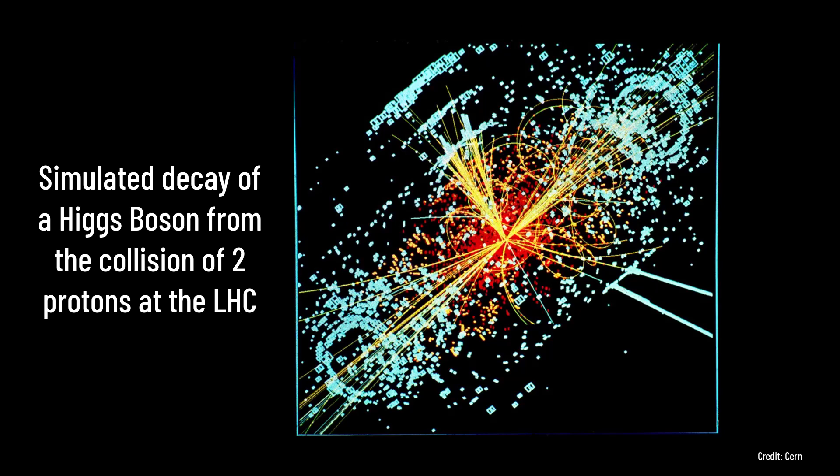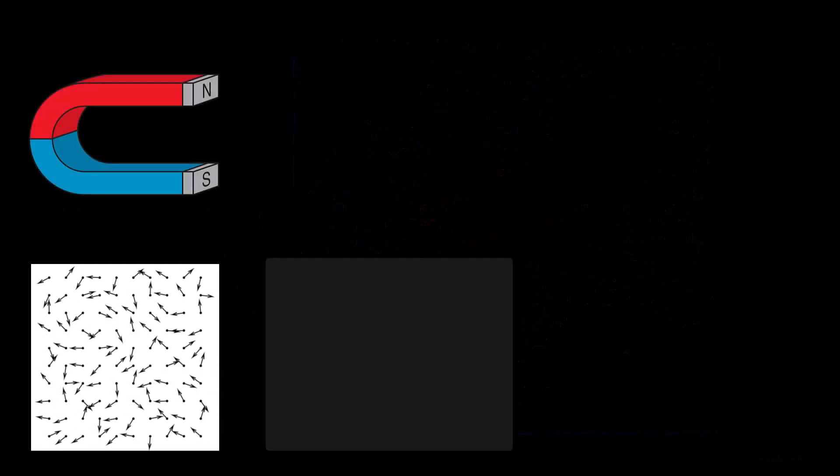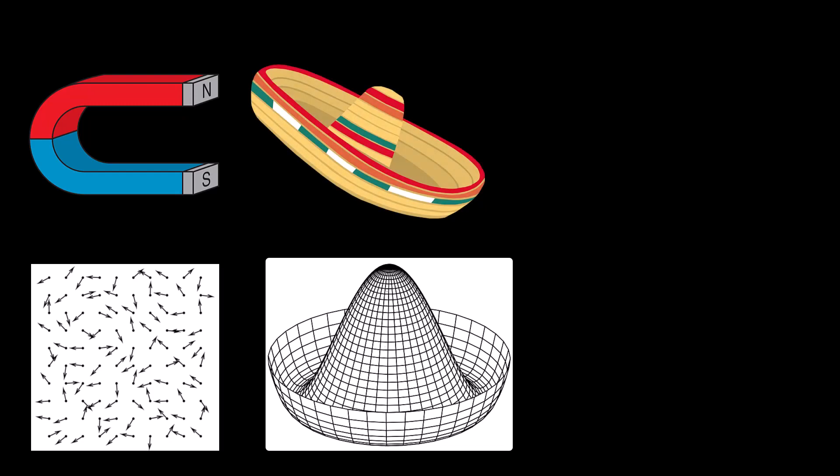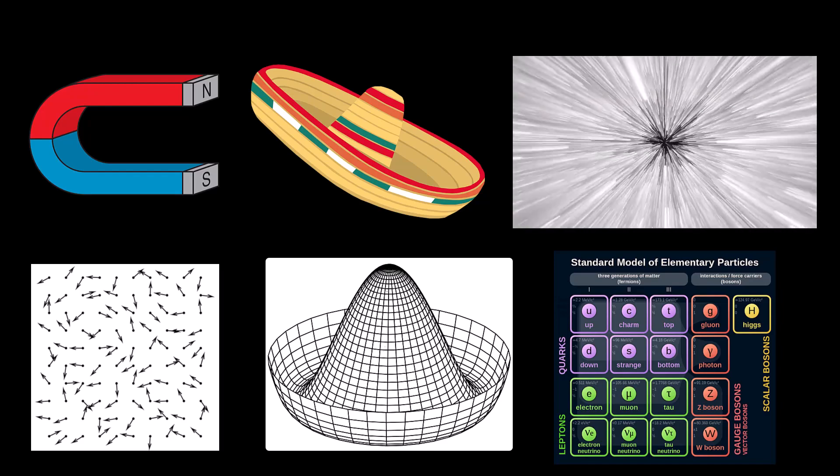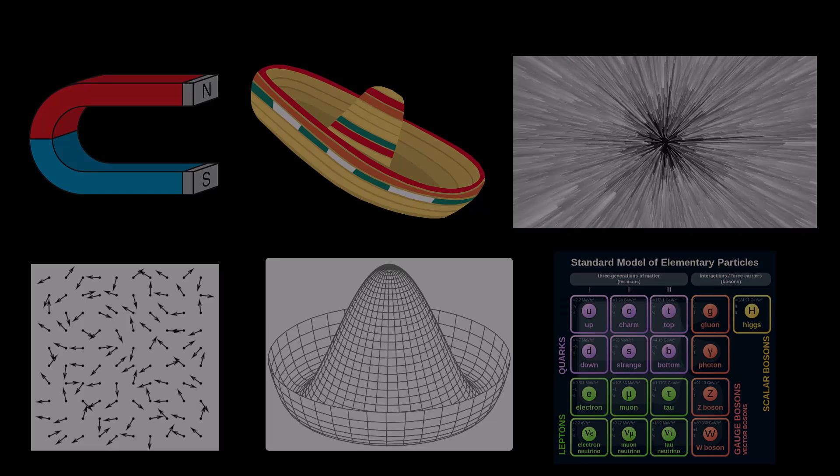This answers my original question, asking how magnets, Mexican hats, and the early universe are related. Magnets show spontaneous symmetry breaking, which can be described by the Mexican hat potential, and then applied to the high temperatures of the early universe and unification of the electromagnetic and weak fundamental forces. So big props to you if you knew the answer from the beginning.